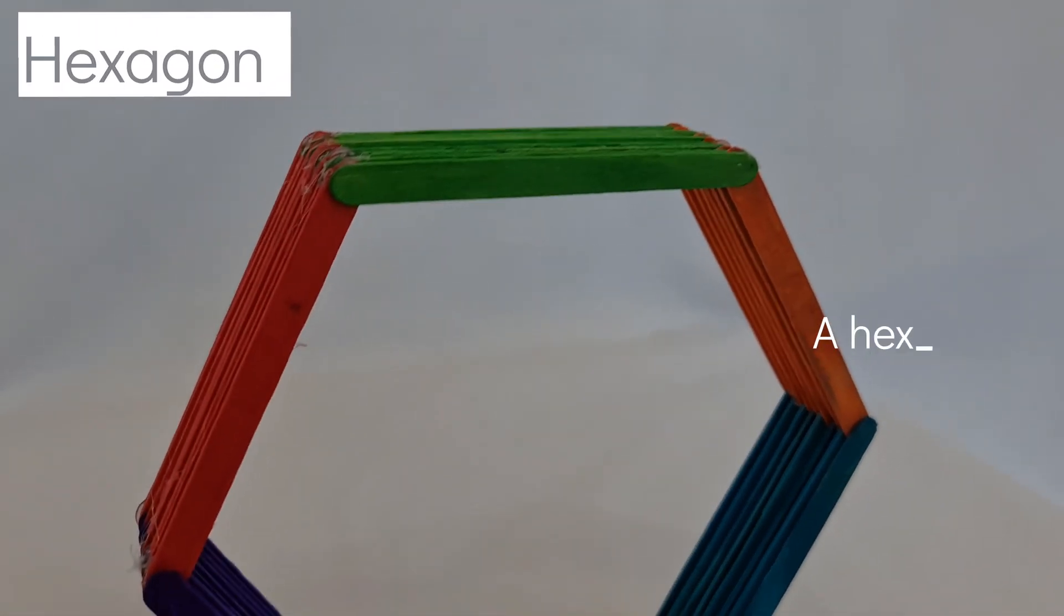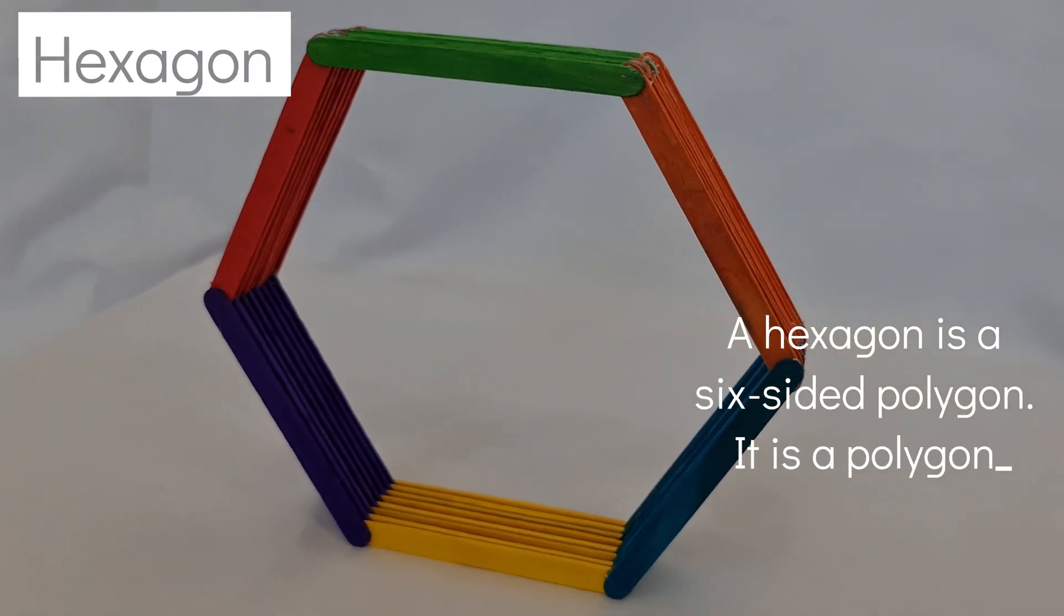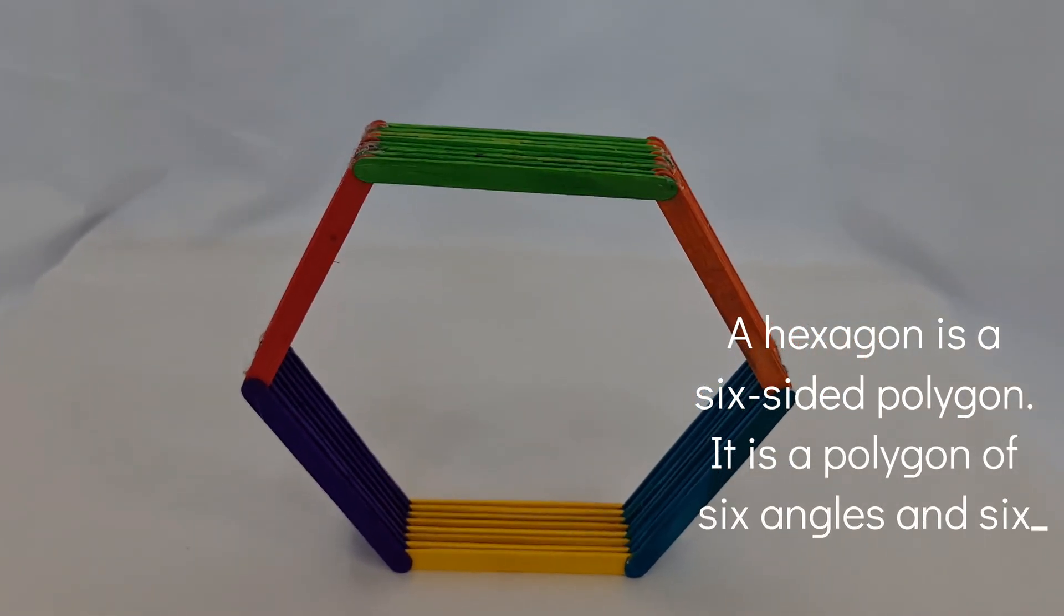Hexagon. A hexagon is a six-sided polygon. It is a polygon of six angles and six sides.